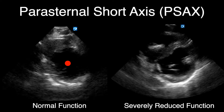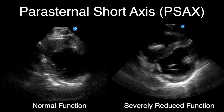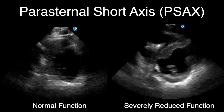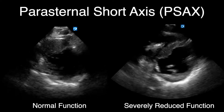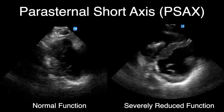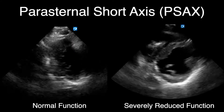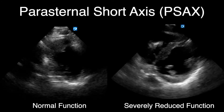The walls do not need to touch — that would imply an ejection fraction of 100%. Normal is approximately 50-55%. In the normal function example we see good wall collapse toward the center. In the severely reduced example the left ventricle is not collapsing well and the myocardium is not moving toward the center. Also visible here is a pacemaker lead within the right ventricle — we're focusing on the left ventricular wall.